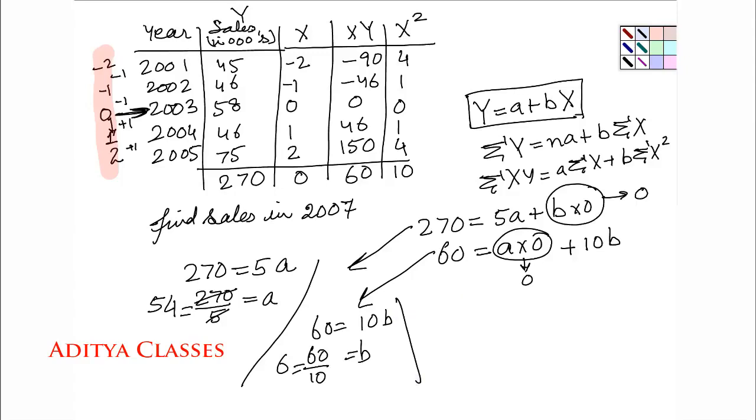What is my regression equation? It was y equals a plus bx. Let me put these values in this equation. I get y equals 54 plus 6x. This is my regression equation for the given data.